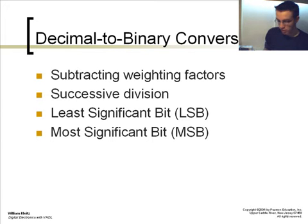With the decimal to binary conversion, we have the least significant bit, the LSB, and the most significant bit, the MSB. The MSB is the leftmost bit, and the least significant bit is the rightmost bit. Again, we have weighting factors, and we can use the conversion technique of successive division for this conversion.